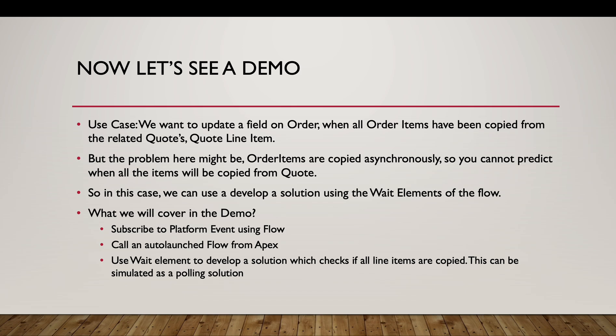Now we will see a demo. The use case is: we want to update a field on an Order when all the order items — the order products — have been copied from the related quote's quote line items. A quote has quote line items, and an order has order products. We want to copy all the quote line items from the quote to the order products. The problem here is that the order items for an order can be multiple, and we want to make that operation asynchronous. Since it's asynchronous, we cannot predict when all the order items will have been copied from the quote.